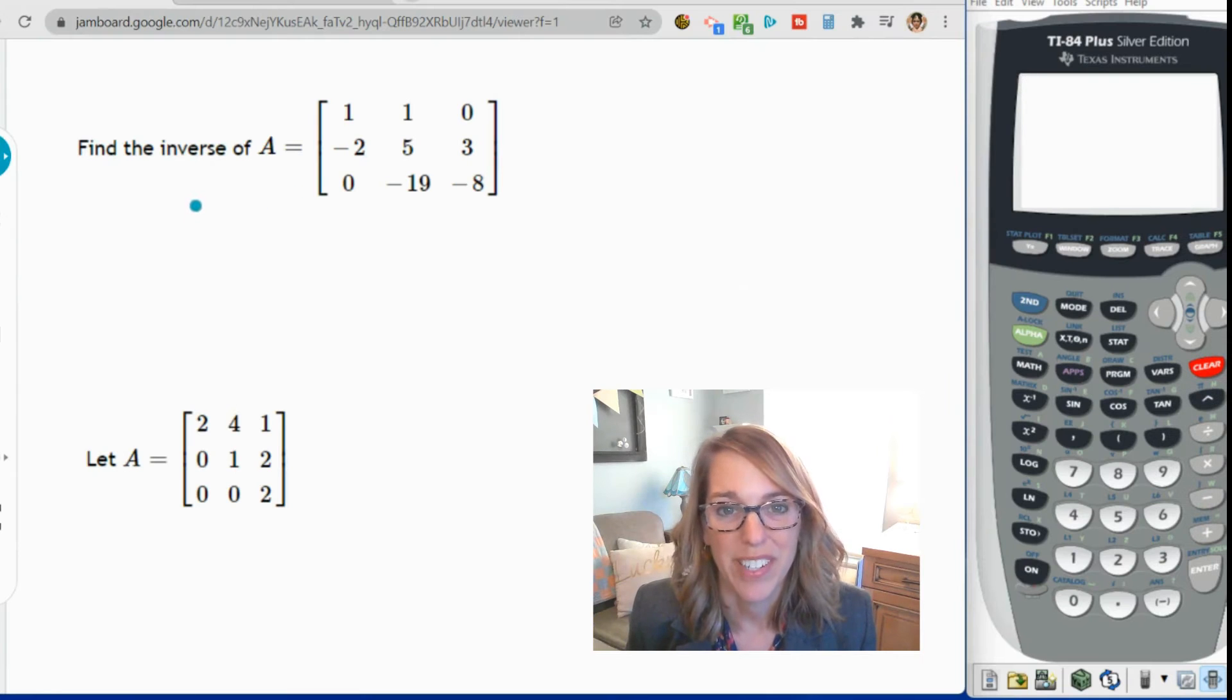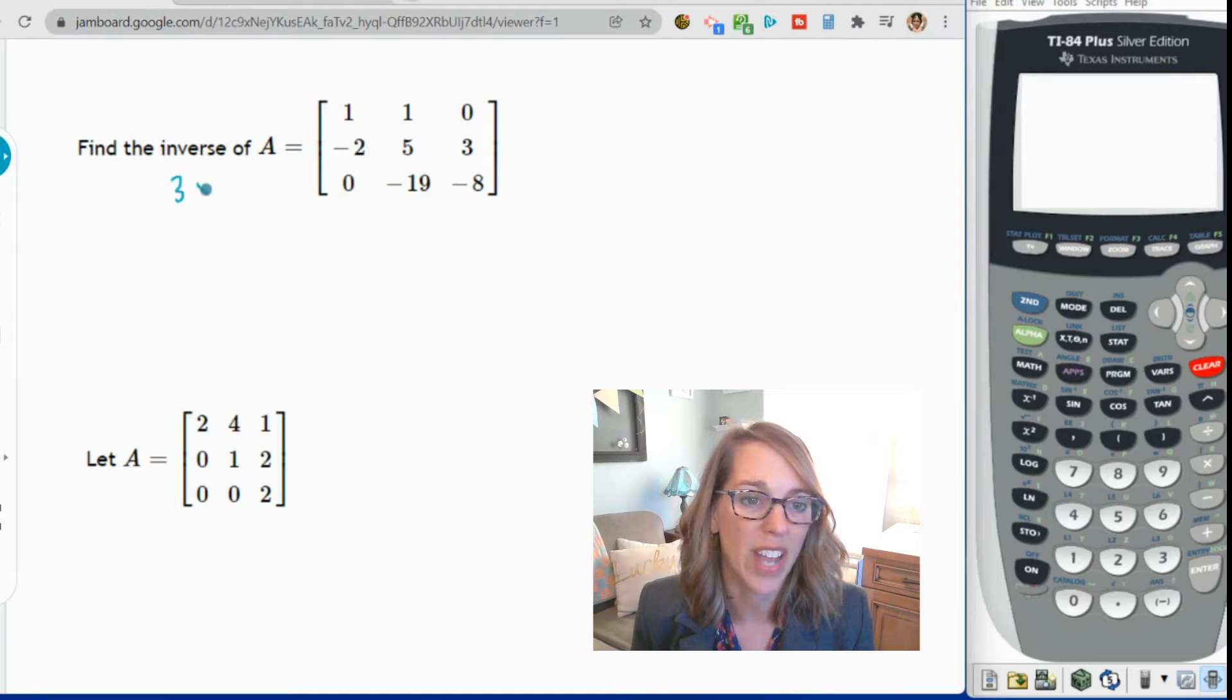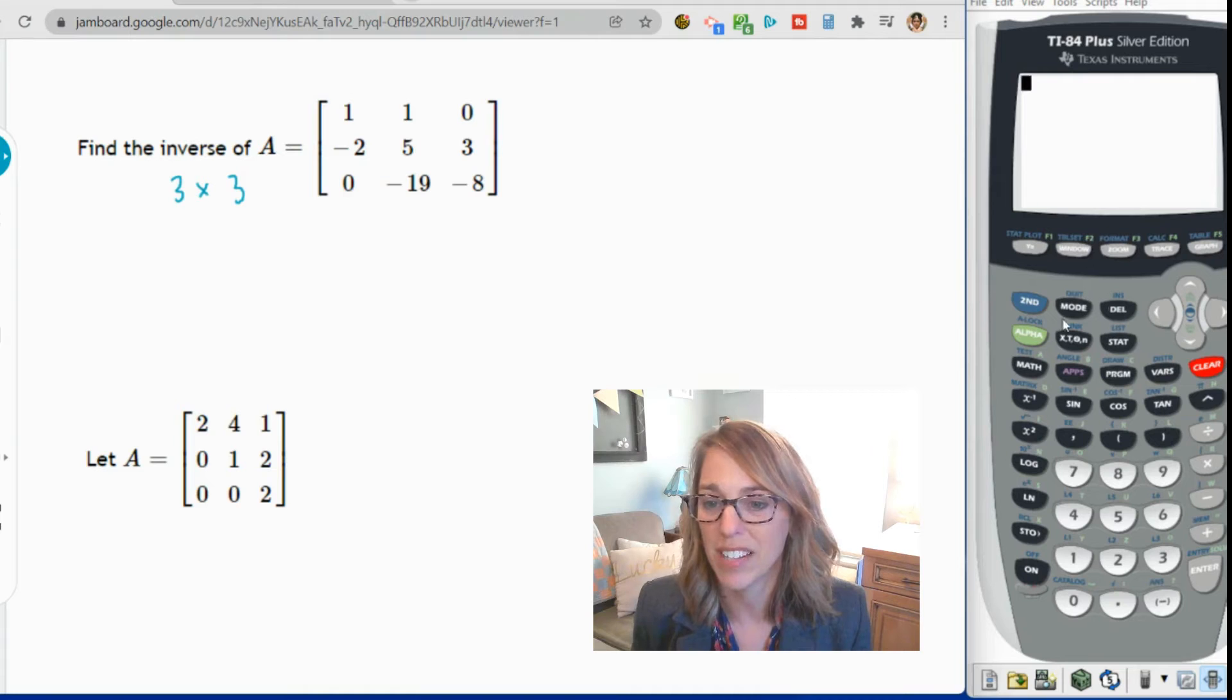I've got two examples here. In the first example, we want to find the inverse of this matrix A. It is a three by three matrix because I've got three rows and three columns. I'm going to put this into my calculator. I'm going to start by going to the matrix menu and input the matrix. Then I'll go ahead and take the inverse. So let's go ahead and do that.